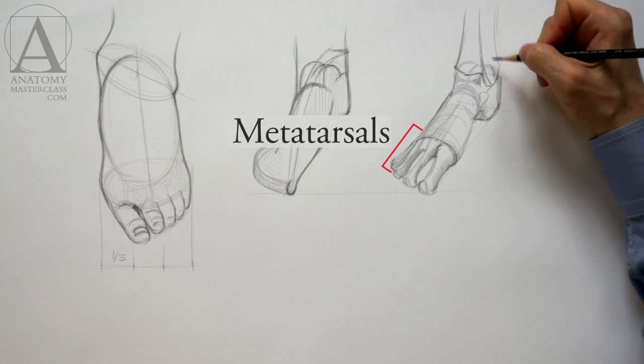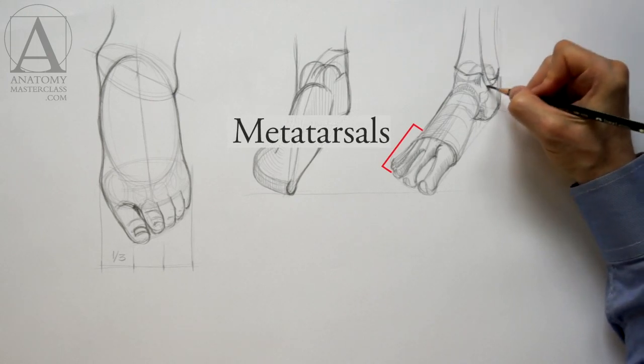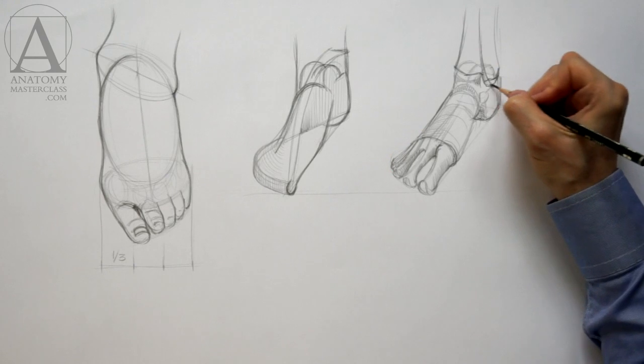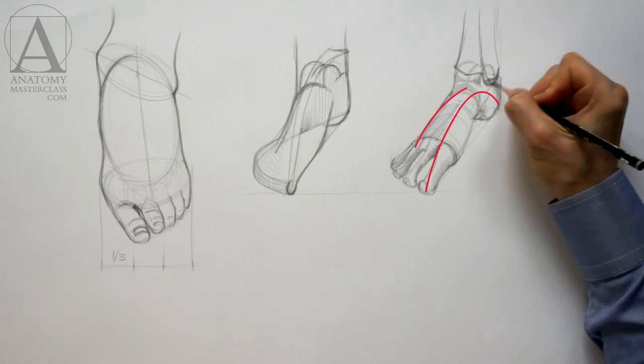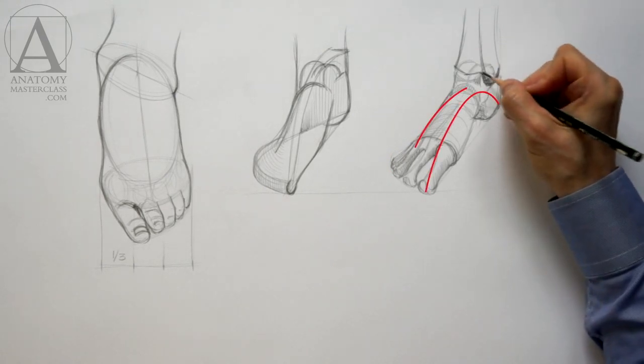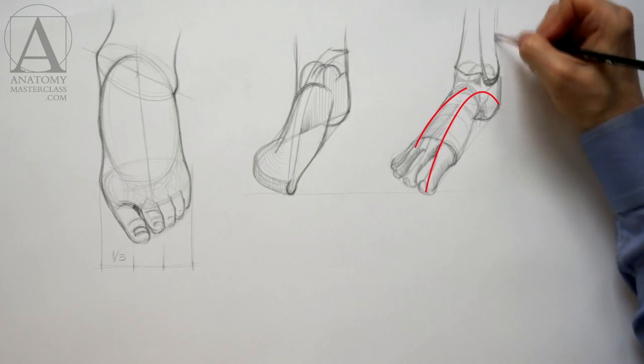The metatarsal bones are comparable to the five metacarpal bones. I already mentioned two arches that are located along the foot, the inner and the outer arch.